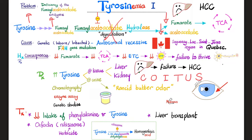Management: decrease intake of tyrosine and phenylalanine, which sometimes means decreasing protein intake overall. There is a medication that inhibits 4-hydroxyphenylpyruvate dioxygenase — refer to the video on alcaptonuria as it is the same medication. And when there is liver cell failure, liver transplant is indicated.